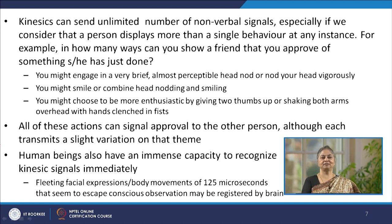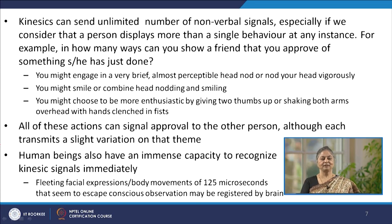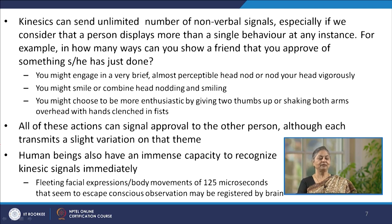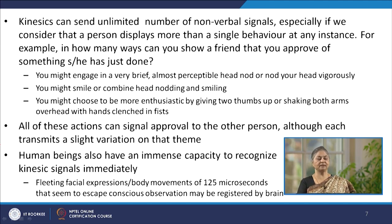We can display more than a single behaviour in any given instance. For example, if we have to appreciate a friend for something he or she has just done, we might give a nod, a half smile, combine the nod and smile, or pass on hand signals. What we pass on is immediately understood by friends — even though what is common in all these signals is a sense of appreciation. The level of appreciation and different variations are also immediately understood by the receiver. Signals sent in 125 microseconds — fleeting facial expressions and body movements — can also be registered by our brain.